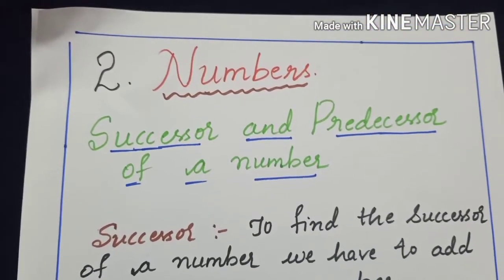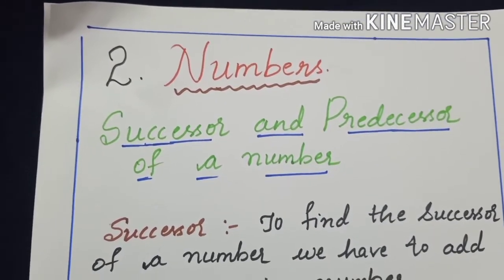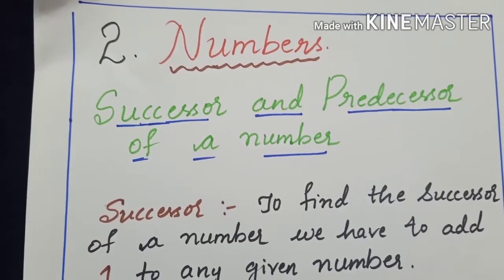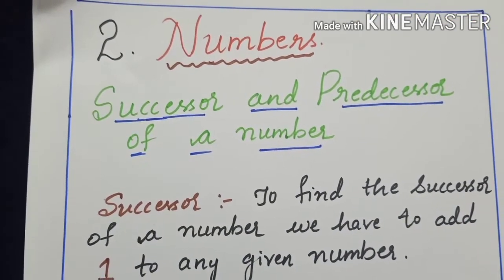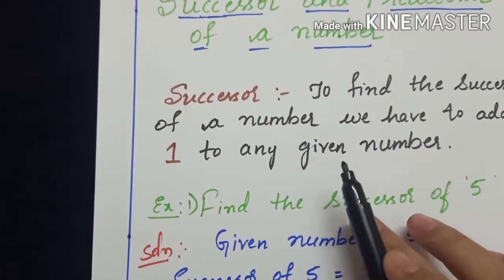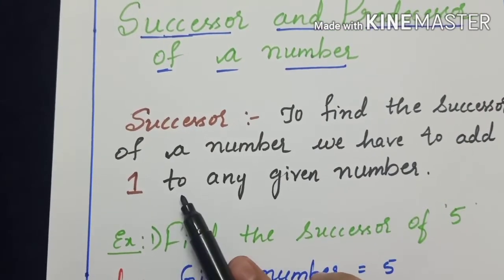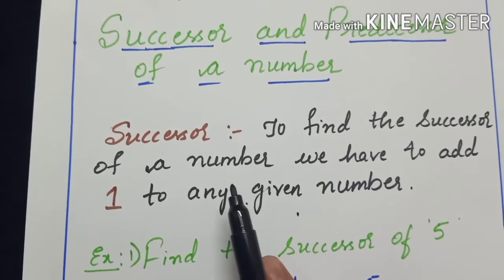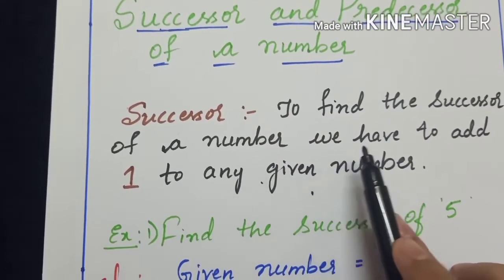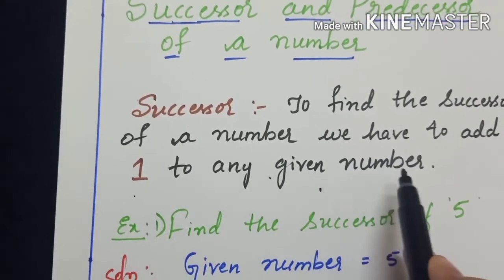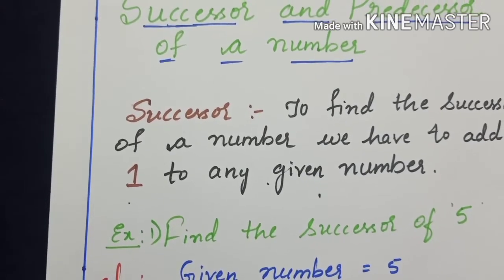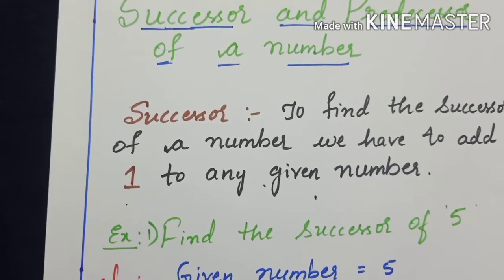Let us move on to the next concept, that is numbers. This chapter you have also studied earlier in your fifth standard. The next topic in this is successor and predecessor of a number. To find the successor of a number, we have to add one to any given number. Whichever number they may give you, you just have to add plus one to that number to get the successor of it.